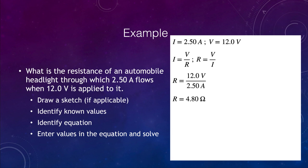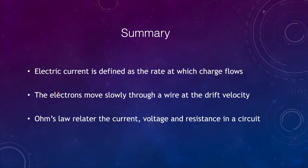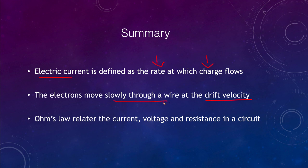Let's finish up with our summary. In this lecture we looked at: electrical current, which is the rate at which charge flows; drift velocity, which is how fast electrons actually move through a wire — very different from the current itself; and Ohm's law, which relates current, voltage, and resistance in an electrical circuit. That concludes this lecture on electric current and Ohm's law. We'll be back again next time for another topic in physical science — have a great day everyone, and I will see you in class.